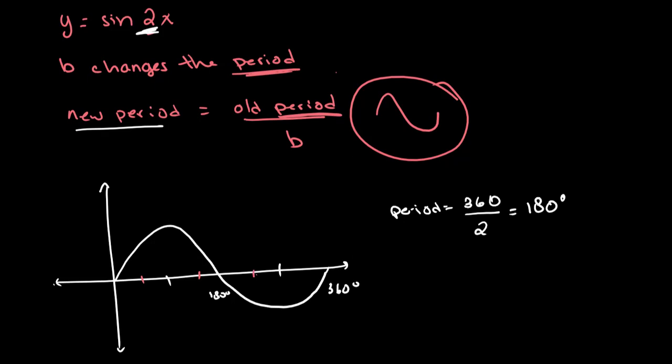That basically means that this loop that we have over here will be complete in 180 degrees. So what we end up getting looks like this. So essentially, after 180 degrees, which is right here, our graph has completed one loop, and then by 360 degrees, it has completed two loops. So we can erase that.